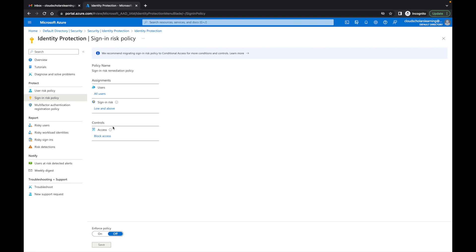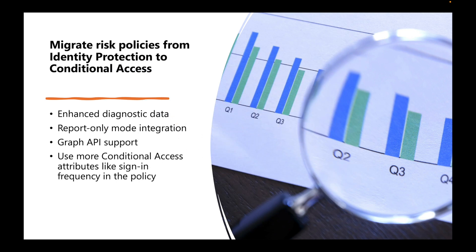You might be thinking, why would I want to make that migration? Migrating your risk policies from identity protection to conditional access gives you several enhancements: enhanced diagnostic data, report-only mode integration, Graph API support, and the ability to use more conditional access attributes like sign-in frequency in the policy. I'll leave the Microsoft article link in the description. I would also add that you get more flexibility.